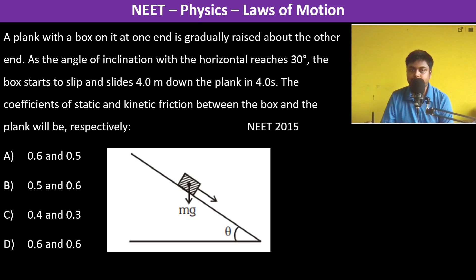A plank with a box on it at one end is gradually raised about the other end. As the angle of inclination with the horizontal reaches 30 degrees, the box starts to slip and slides four meters down the plank in four seconds. The coefficient of static and kinetic friction between the box and the plank will be: